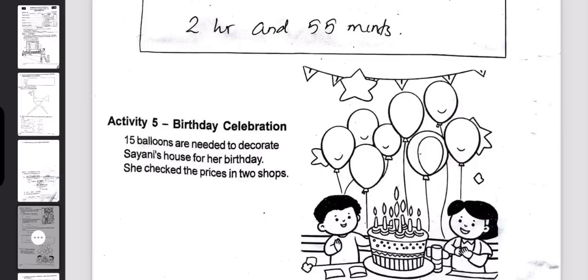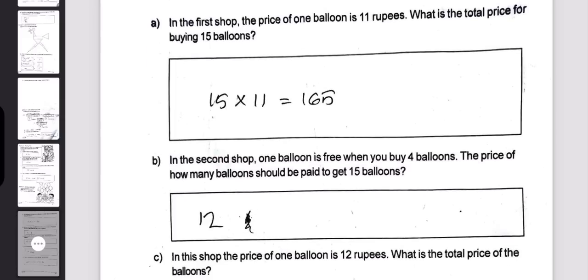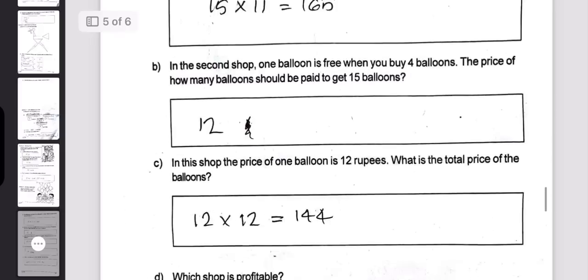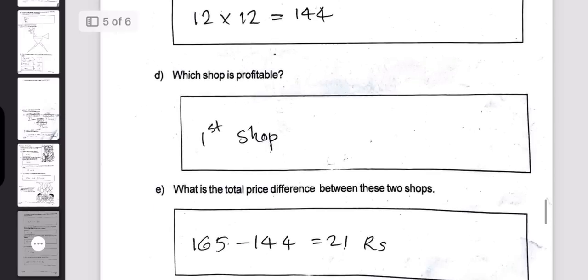She checked the prices in 2 shops. In the first shop, the price of 1 balloon is 11 rupees. What is the total price for buying? In the second shop, the price of 1 balloon is 12 rupees. What is the total price of the balloons? Which shop is profitable, and what is the total price difference between these two shops?